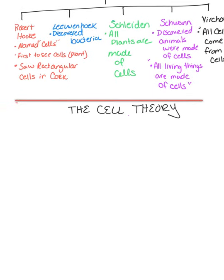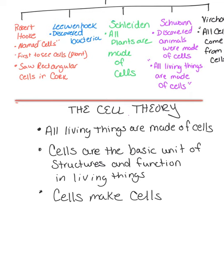The next thing that is very important in life science is to make sure you understand the cell theory. This is a widely accepted explanation of the relationship between cells and all living things. This theory states three things: all living things are made of cells, cells are the basic unit of living things, and cells make cells.